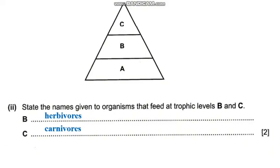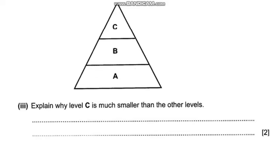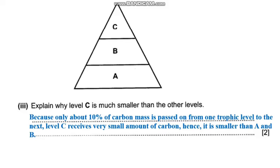Let us now move on to question A3. The question reads: explain why level C is much smaller than other levels. Level C is much smaller because only about 10% of the biomass is passed on from one trophic level to the next level. Level C receives a very small amount of biomass, hence it is smaller than levels A and B.